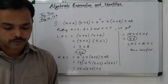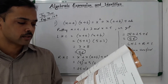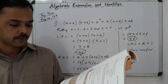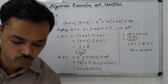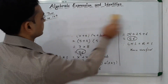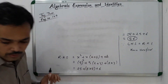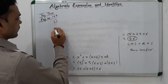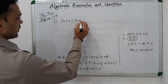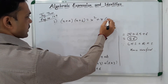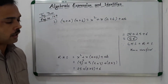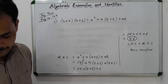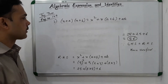Now let us move on to question number 3. In question number 3, we consider a special case of identity 4, where at place of both A and B we put minus C. We want to see what we get and whether it is related to identity 2. Identity 4 is: (x + a)(x + b) = x² + (a + b)x + ab.